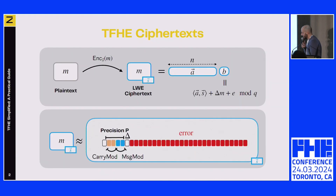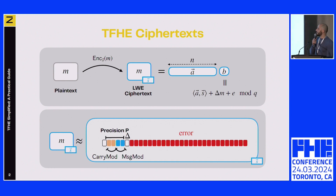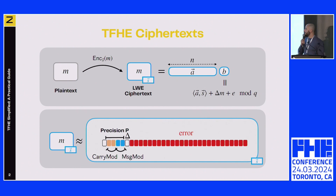TFHE is the fully homomorphic encryption scheme. This is based on LWE, learning with error, the classical assumption, and everything is based upon that. The ciphertexts are constructed so that a message M is scaled onto the most significant bits, then a scalar product is computed with a mask of random values, and security is completed by a noise taken from a Gaussian distribution.